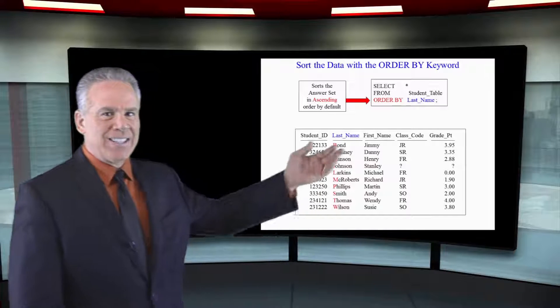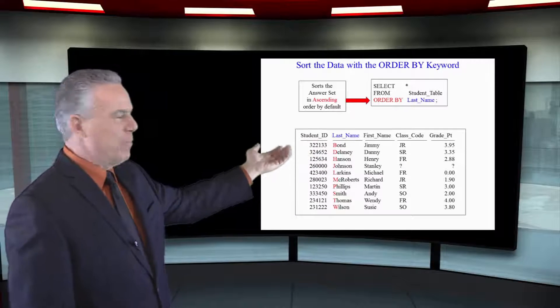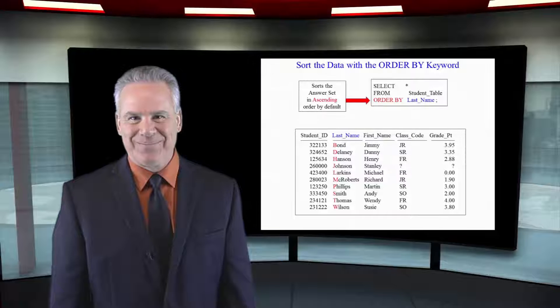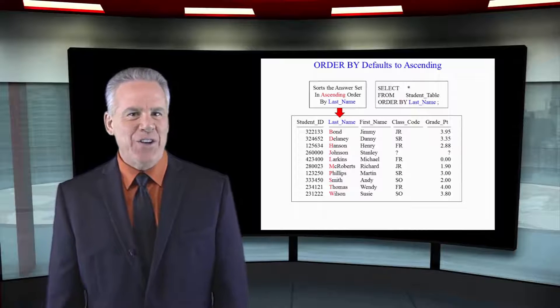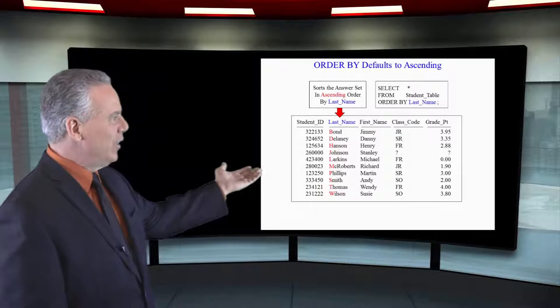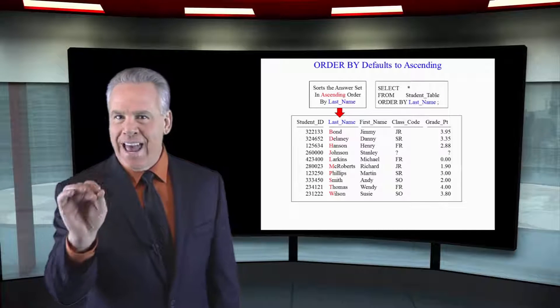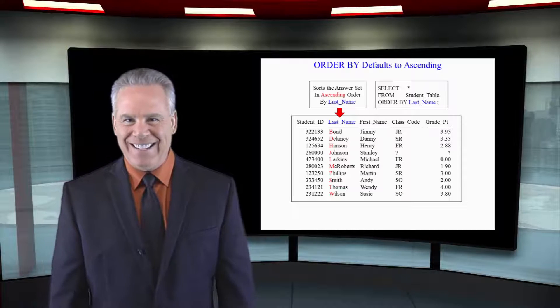Take a look at our query: SELECT * FROM student table, ORDER BY last name. We're selecting all the columns in the table from the student table and sorting the report by last name in ascending order. There's that good looking report — notice that the results came back with the last names sorted from A to Z.